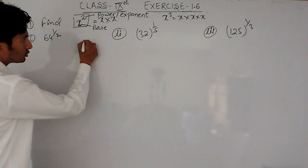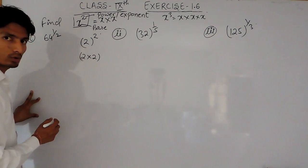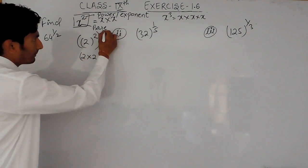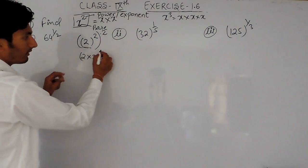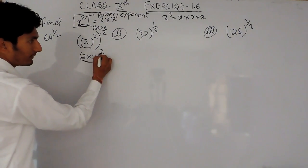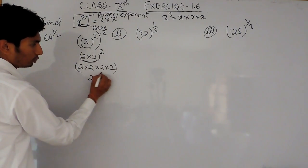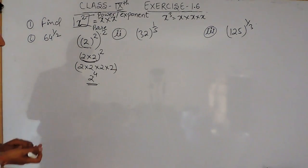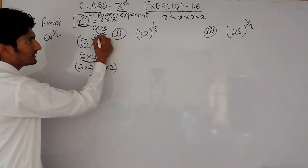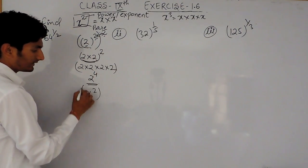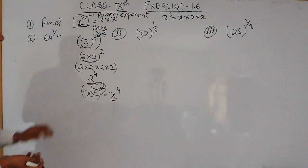Now if I am saying this is 2 squared, that means it will be 2 multiplied by 2. And if this expression has another power of 2, then this complete number will be multiplied 2 times — meaning 2 is multiplied 4 times. So instead of writing these two steps, if some number has a power raised to another power, you have to multiply those two powers. That means x squared raised to power 2 will become x raised to power 4. The powers get multiplied. This is the first law which will be applied in this question.